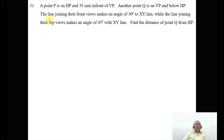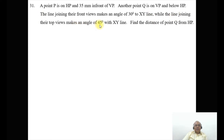In this video we are going to take up one more problem on the projections of points. The problem reads: point P is on HP and 35mm in front of VP. Another point Q is on VP and below HP. The line joining the front views makes an angle of 30 degrees with the XY line, while the line joining the top views makes an angle of 45 degrees with the XY line. Find the distance of Q from HP.